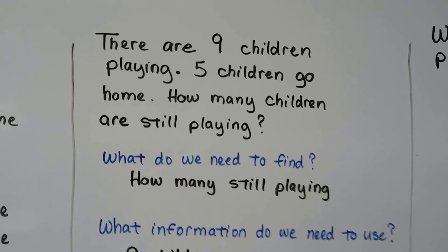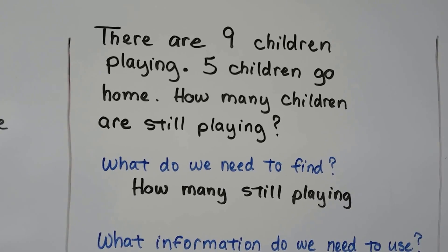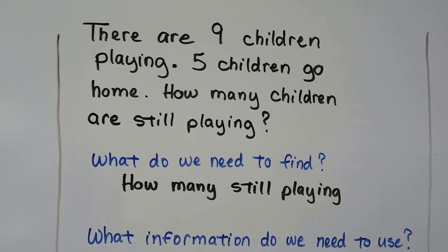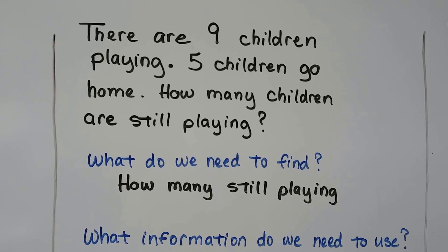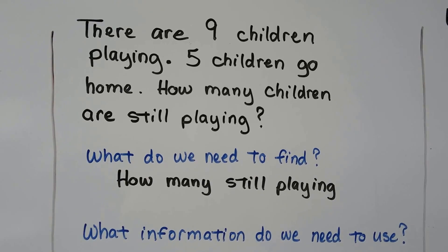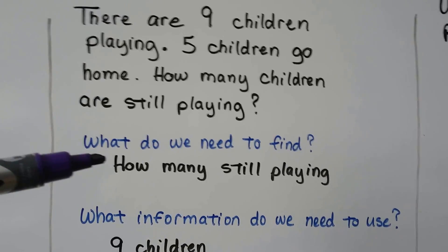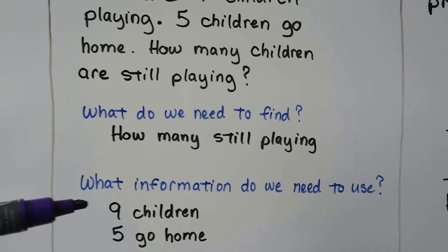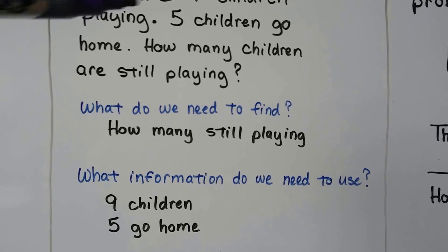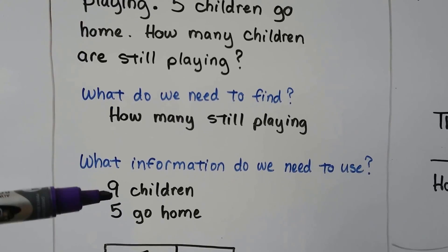There are nine children playing. Five children go home. How many children are still playing? What do we need to find? How many still playing? What information do we need to use? There's nine children and five children go home.